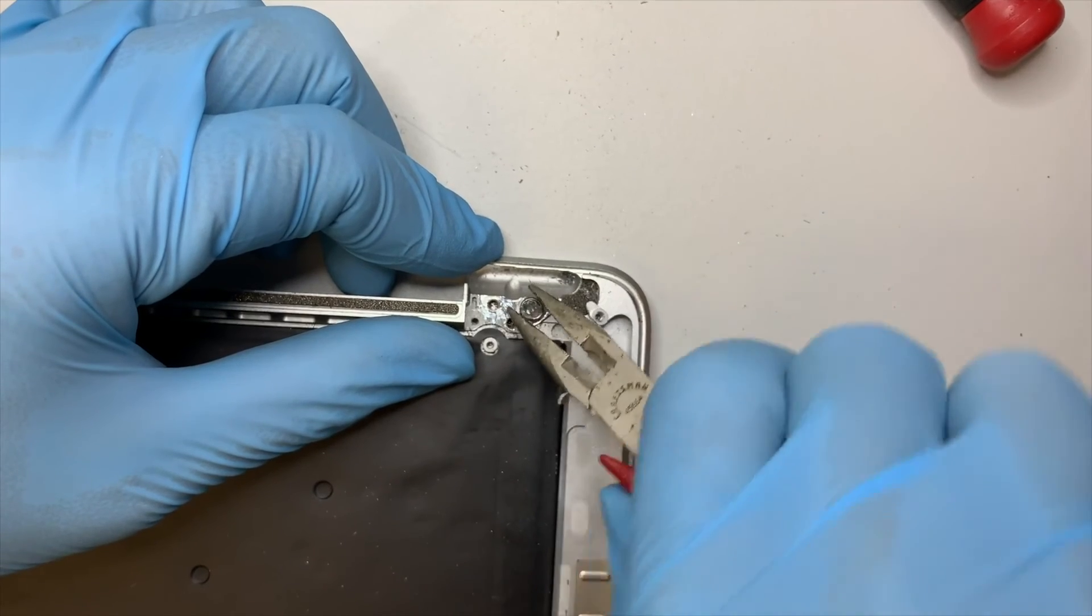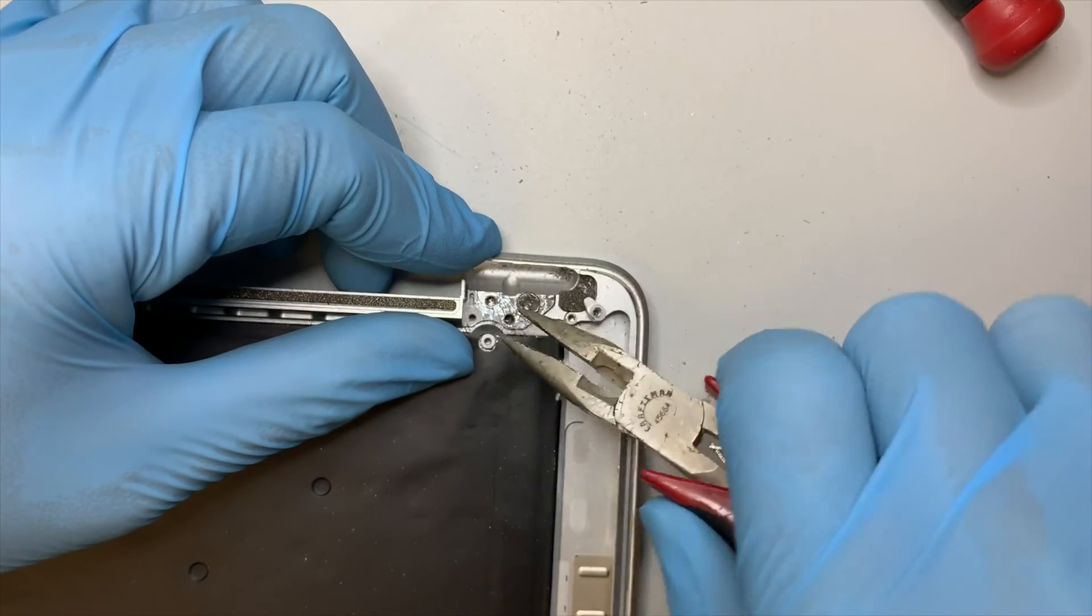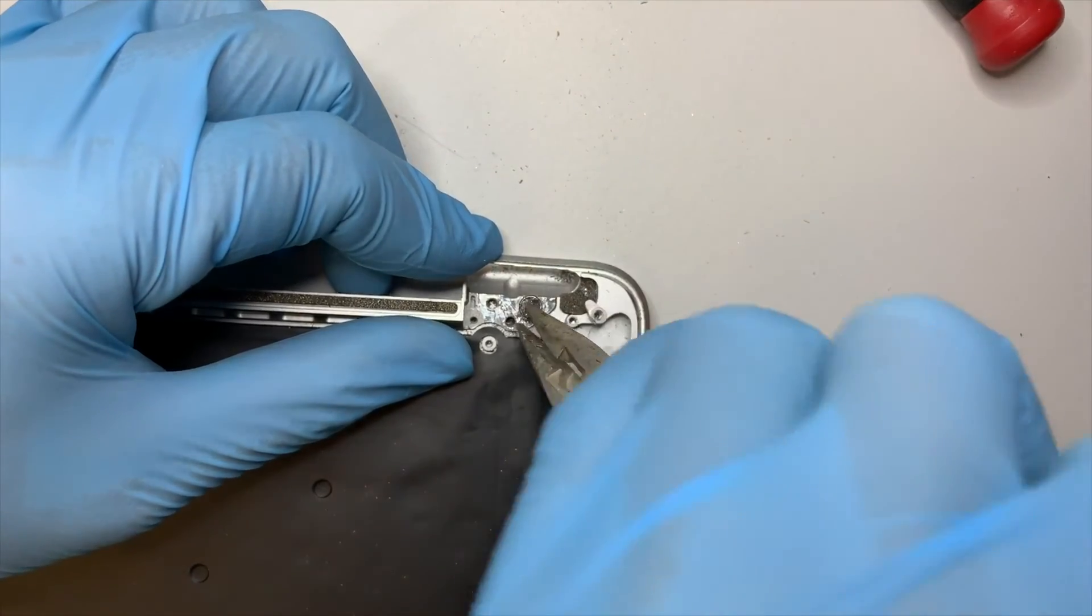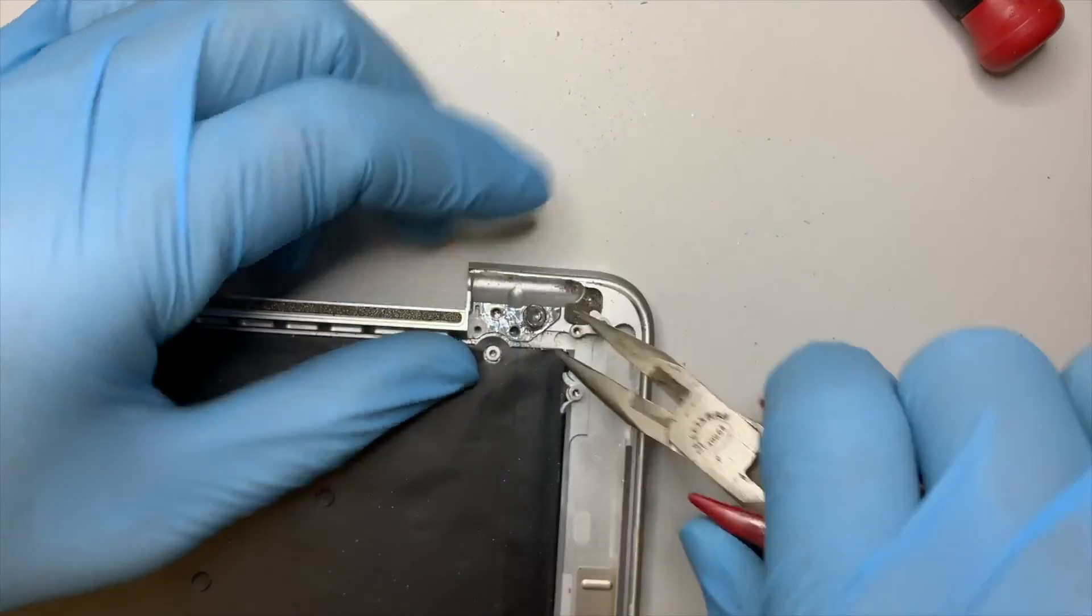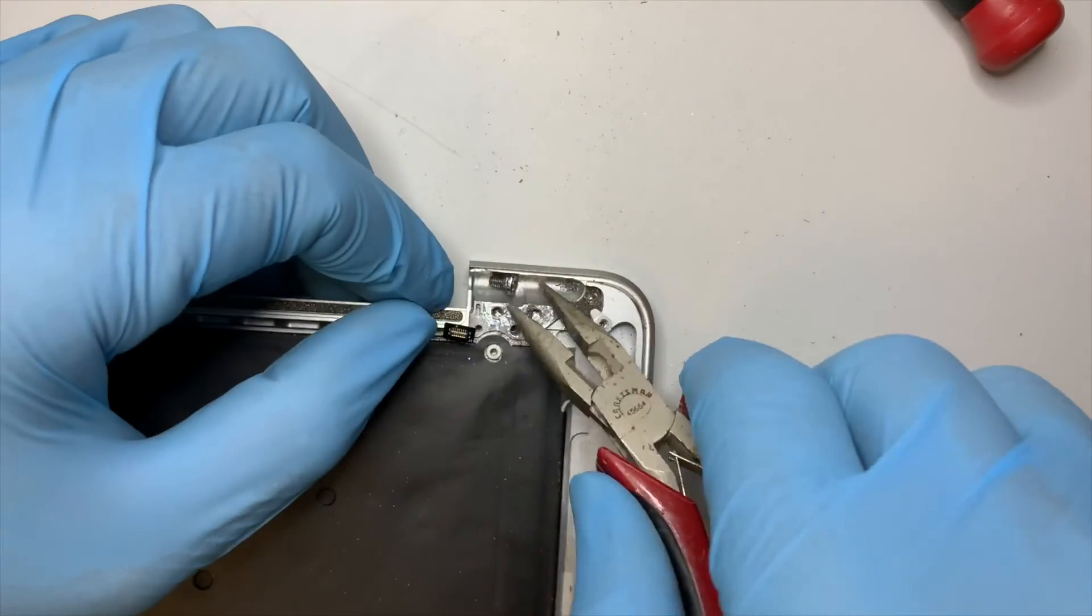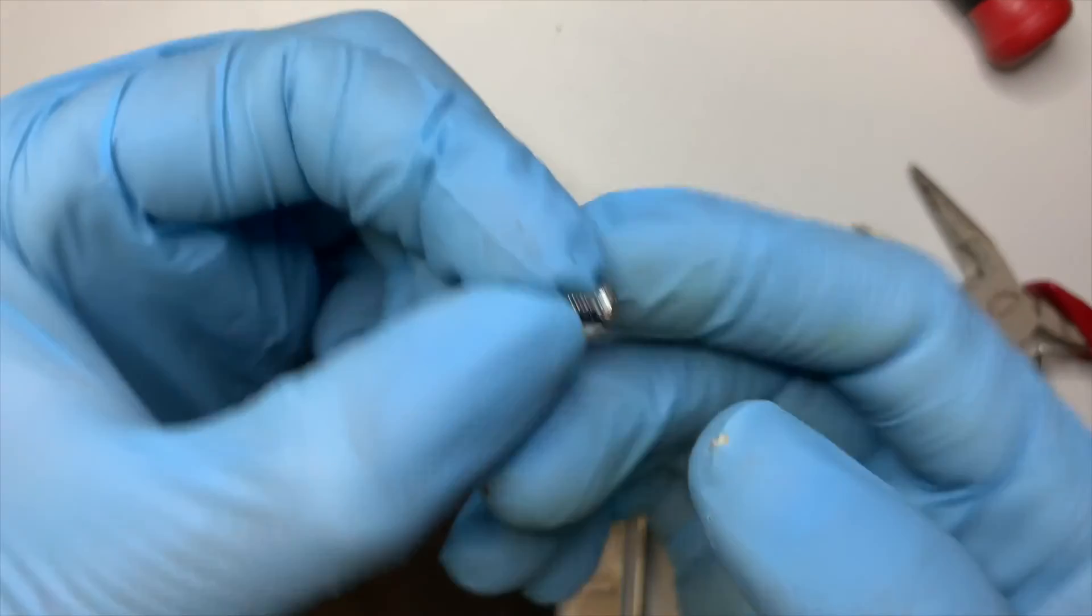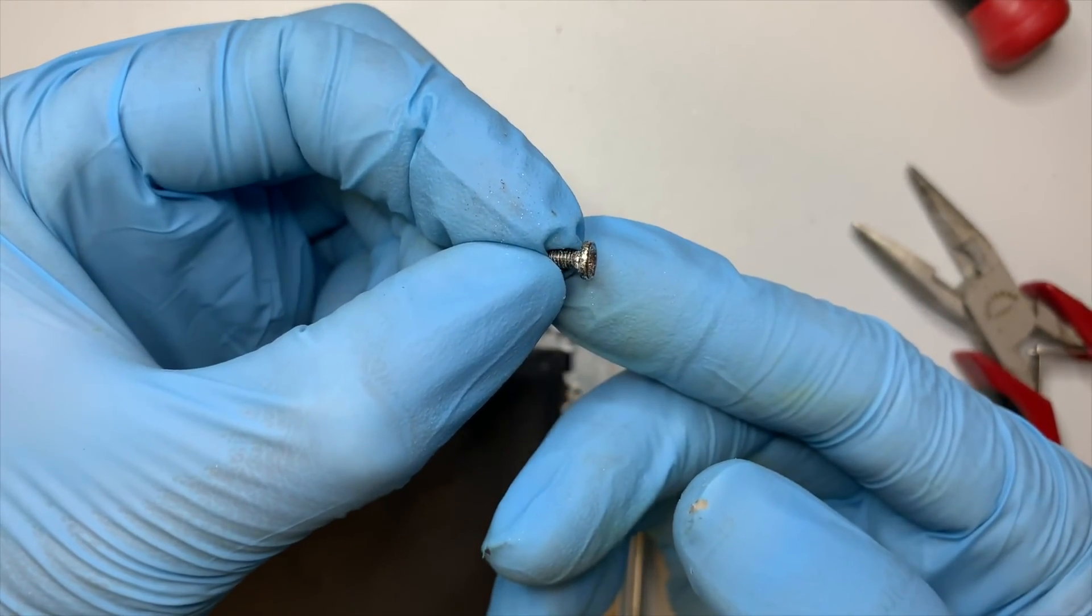Let's get back to the screw. Using a plier, kind of bit by bit. Twist it, press, twist it. Okay. Here you go. Comes right out.